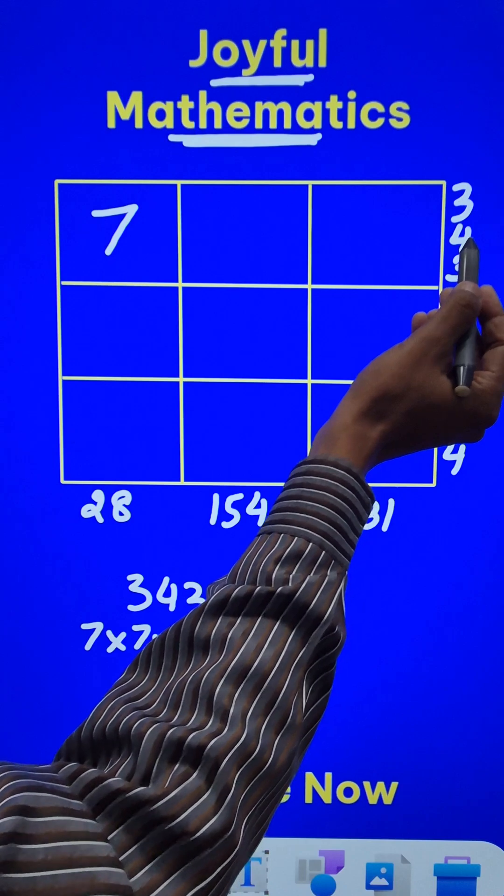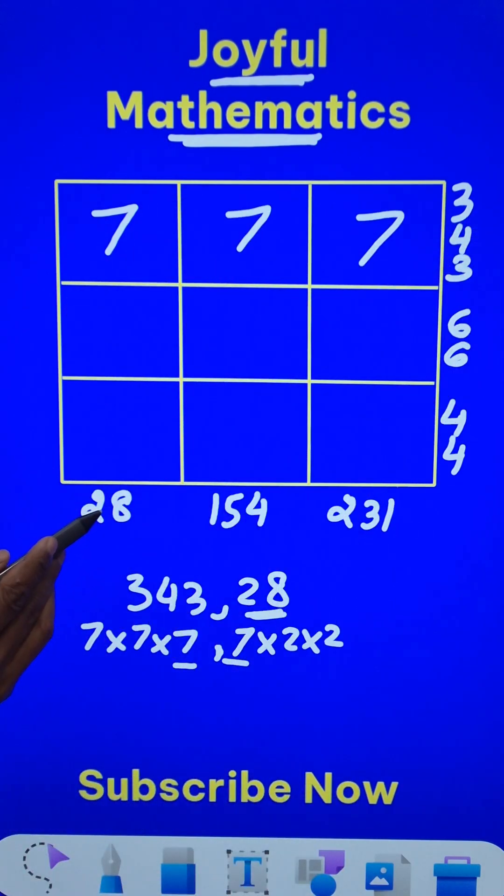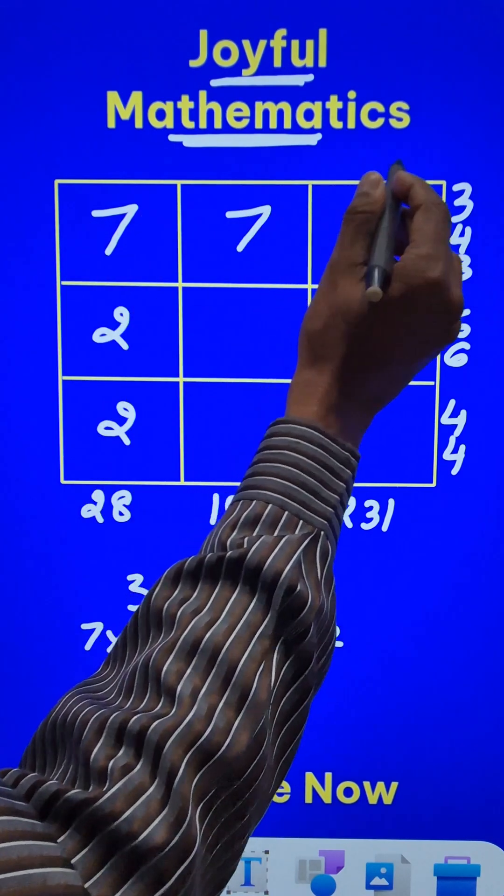And now 343 can only be obtained when you multiply 7 times 7 times 7. And 28 can only be obtained when you have 7 times 2 times 2. So 2 and 2 you can write anywhere here. And these cells are fit.